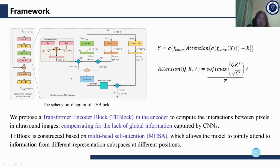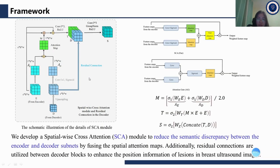T-block is constructed on multi-head self-attention, which allows the model to jointly attend to information from different representation subspaces at different positions. The SCA module reduces the semantic discrepancy between the encoder and decoder subnets by fusing spatial attention maps. Additionally, residual connections are utilized between decoder blocks to enhance the position information of lesions in breast ultrasound images.